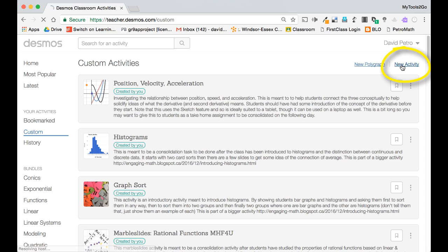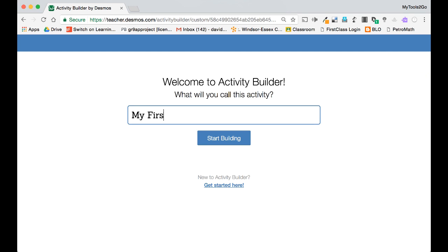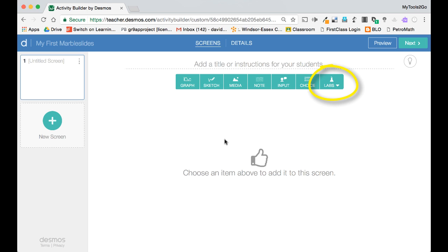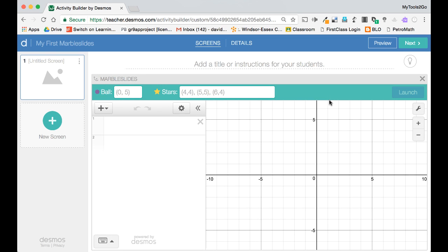As you normally would, you click on new activity and give your activity a name and now on the right hand side you should see labs as a new choice. Click there and you can now choose to add a marble slides page to your activity.